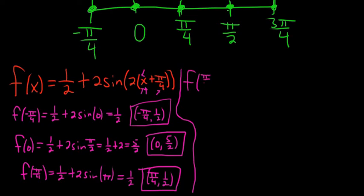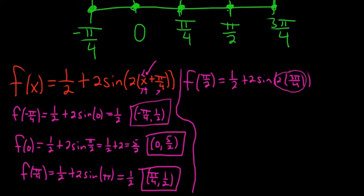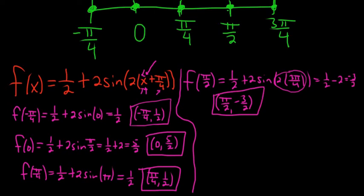Let's do f(π/2). So f(π/2) is 1/2 plus 2 sine of 2·(π/2 + π/4). π/2 is 2π/4, and 2π/4 plus π/4 is 3π/4, times 2 is 3π/2. The sine of 3π/2 is -1, so this is 1/2 minus 2. That's 1/2 minus 4/2, which is -3/2. Skipping some steps in the computation, the ordered pair is (π/2, -3/2).